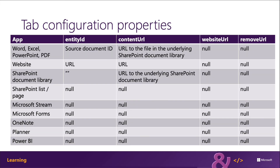Some of these configuration properties are not going to be required, and some aren't even supported for certain tab types. When it comes to Office documents like Word, Excel, PowerPoint, and PDF, you're going to have to specify the content URL of the file for the underlying SharePoint document library where the file is located, as well as the ID of the document — I'll show you in the demo how to get those. For the website tab, you simply pass in the URL as the entity ID and the content URL. For a SharePoint document library, the entity ID has to be empty and the URL has to be the underlying SharePoint document library for the content URL. All other properties are going to be null and won't have any values set on them.